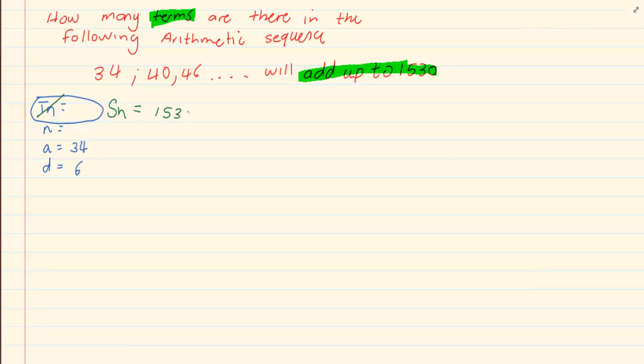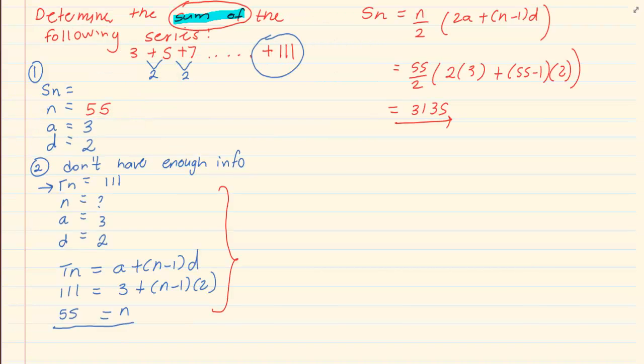...1530. Now as soon as they say add up to, then what we actually have is an S_n. So S_n is 1530. Be careful with the language. Once you have 3 out of 4, it's simple substitution. We use the S_n formula because it says it adds up to 1530.